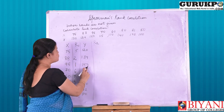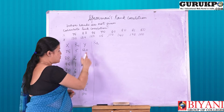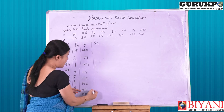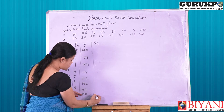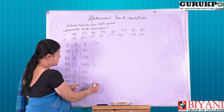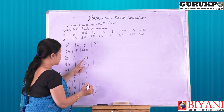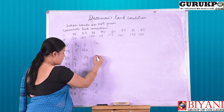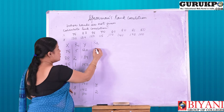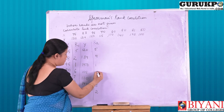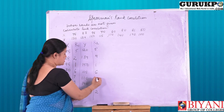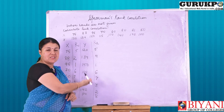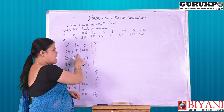In the same manner, I am going to give the ranks to the marks given by judge Y and write it as R2. The highest marks scored by the student is 150, so I am giving rank 1. Moving forward, the next highest marks is 142, third is 140, next highest is 134, then 120, moving on to 115, then 110, and the last is 100. These are the ranks we have assigned as R1 and R2.